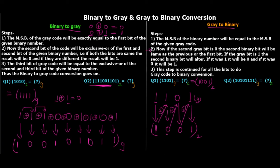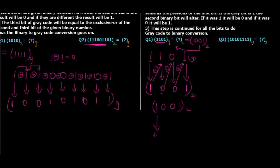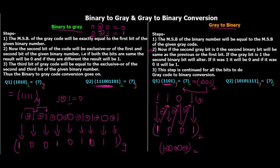To cross-check, let's convert binary 1001 back to gray code. Write the MSB as 1, then take XOR of consecutive binary digits: 1 XOR 0 = 1; 0 XOR 0 = 0; 0 XOR 1 = 1. We get back 1101, which confirms our method was correct.